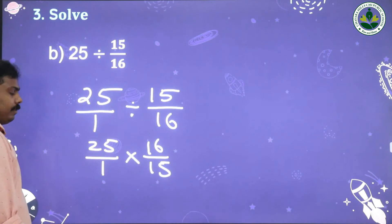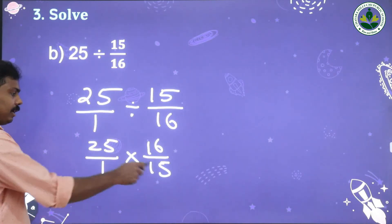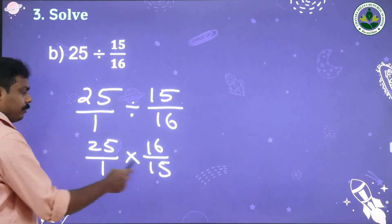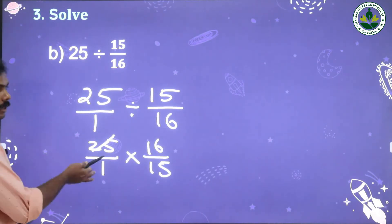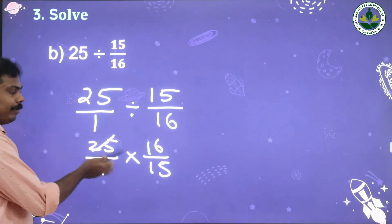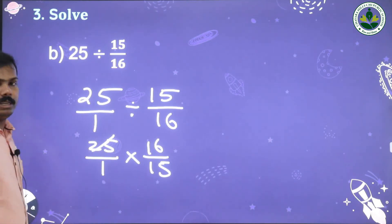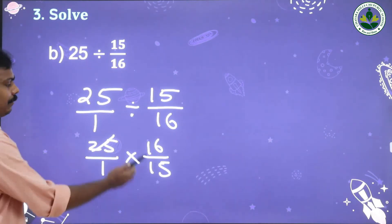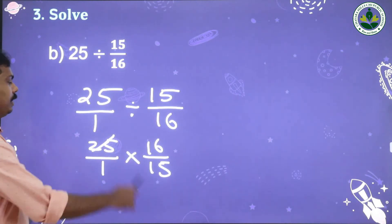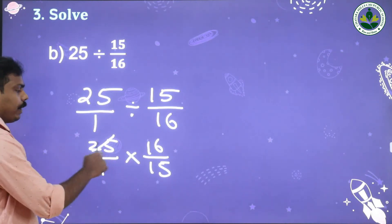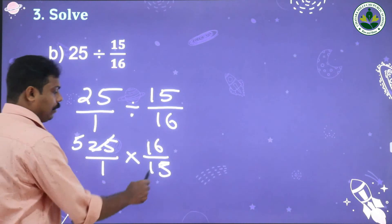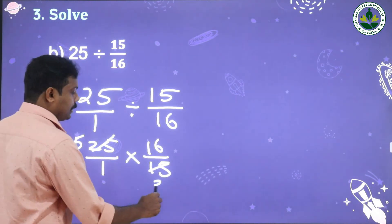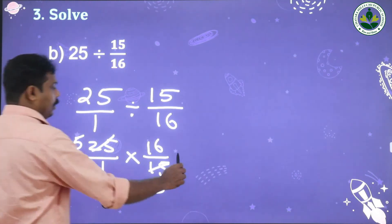Then multiply. We can cancel 15 and 25. For multiplication, we can cancel across numerators and denominators. 25 divided by 5 is 5, and 15 divided by 5 is 3. 5 into 3 is 15.